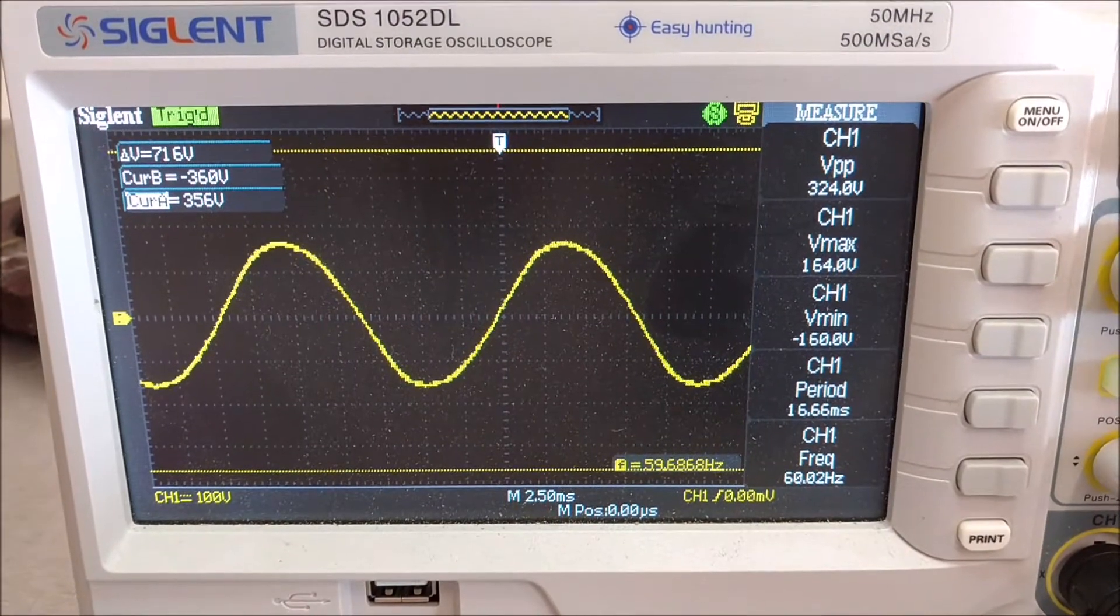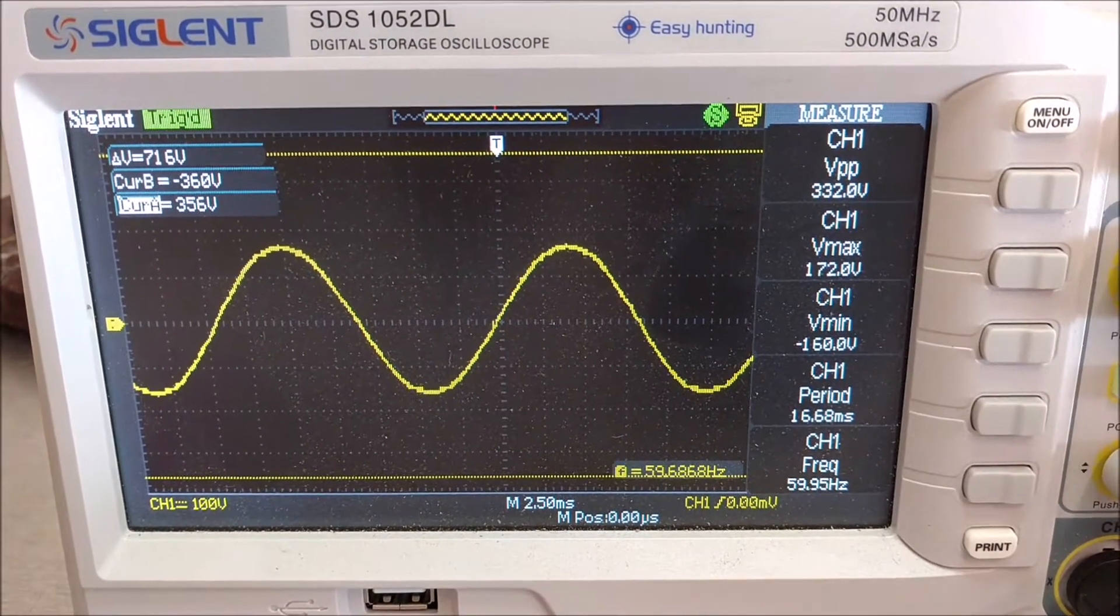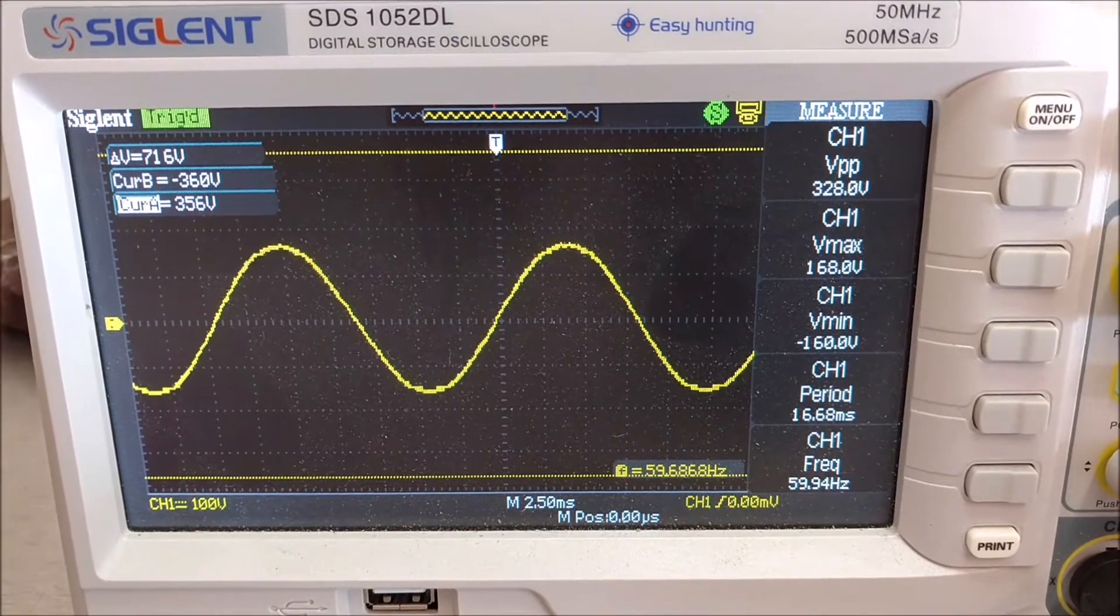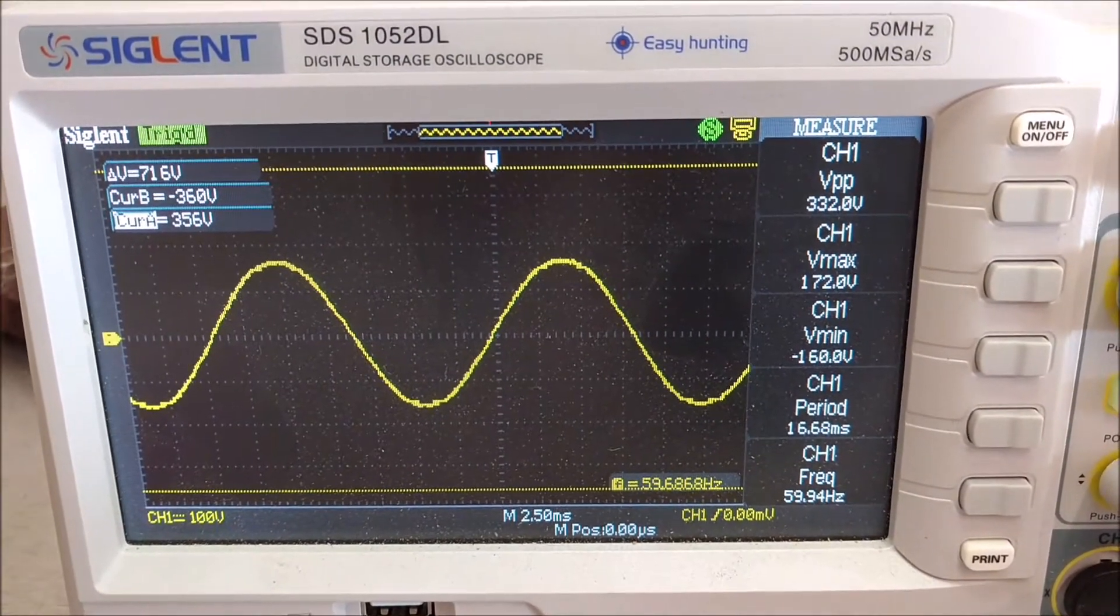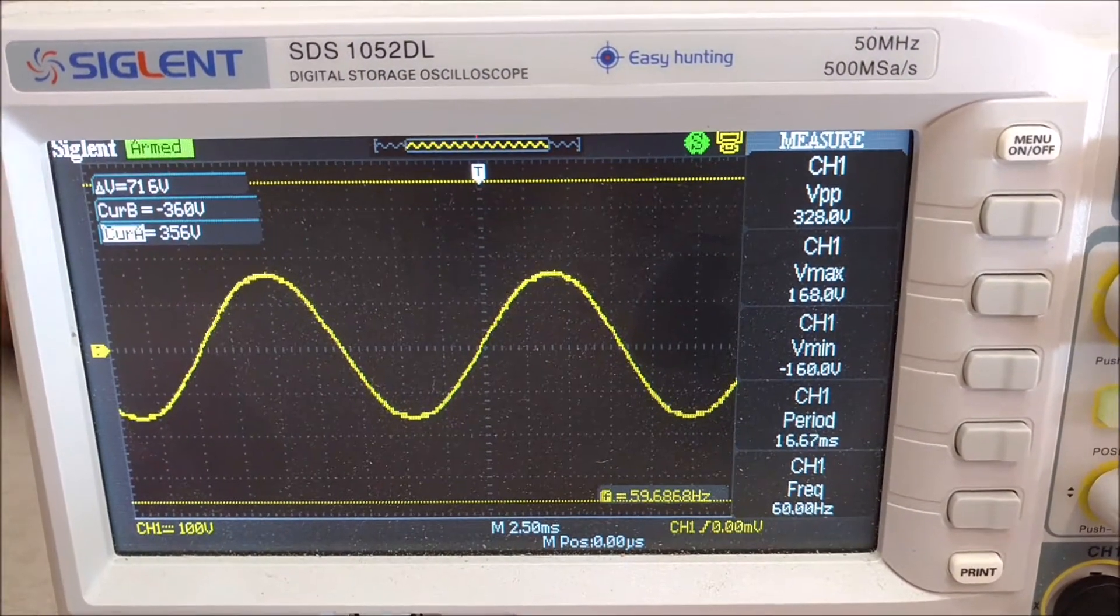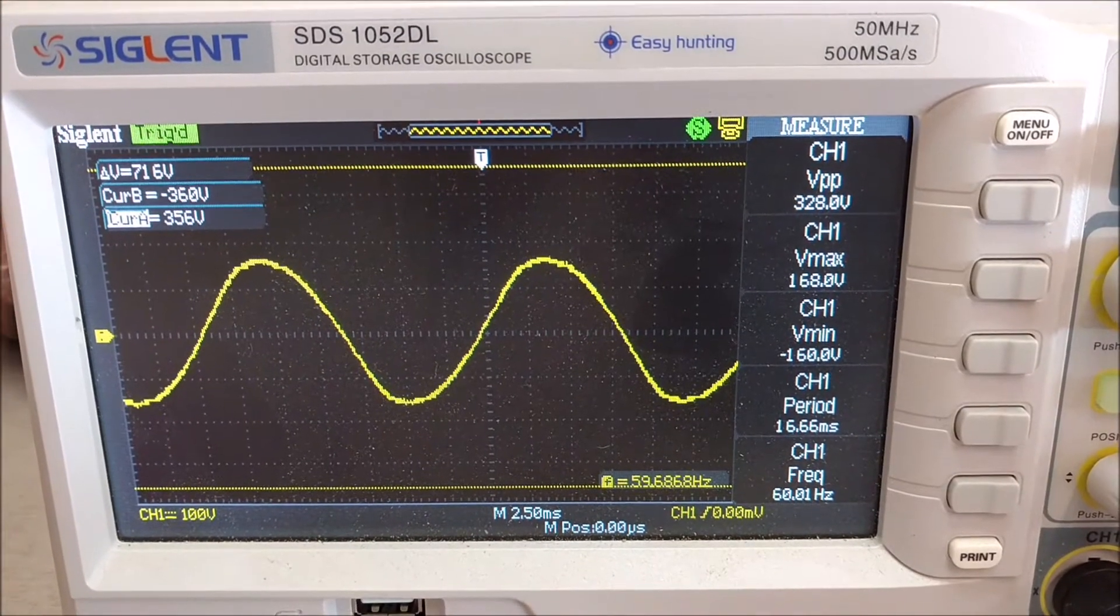Or very little. And on the right side I've got the Graticule set for measure, so you can actually see the numbers on this 50 MHz oscilloscope.